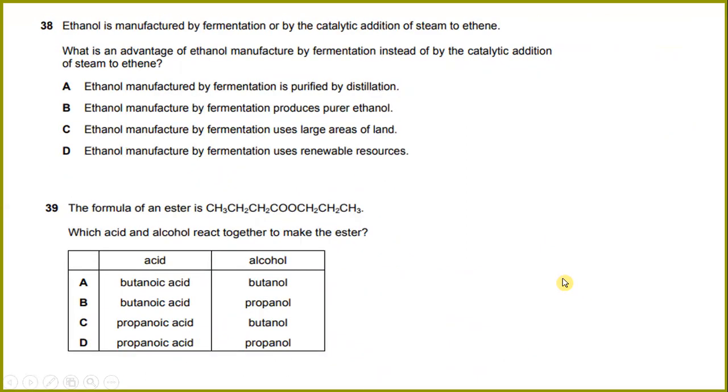Ethanol is manufactured by fermentation or by the catalytic addition of steam to ethene. What is an advantage of ethanol manufactured by fermentation instead of by the catalytic addition of steam to ethene? Ethanol manufactured by fermentation uses renewable resources.